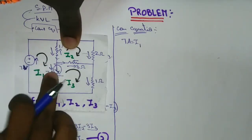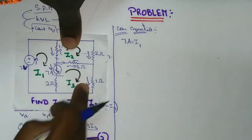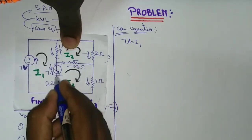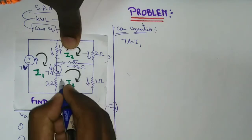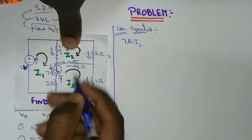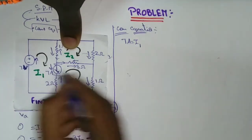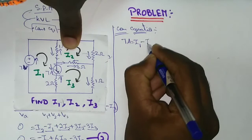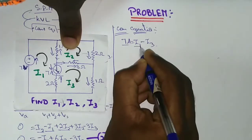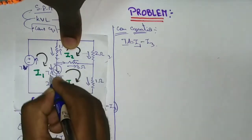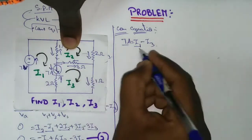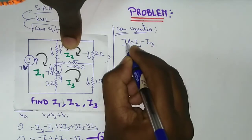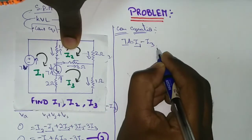If you look at this loop, I3 is here. Then 7 amps is here and the direction of I3 is here — so the direction is changed. If 7 amps is in the opposite direction of I3, then 7 amps is equal to I1 minus I3, which means 7 amps equals I1 minus I3.